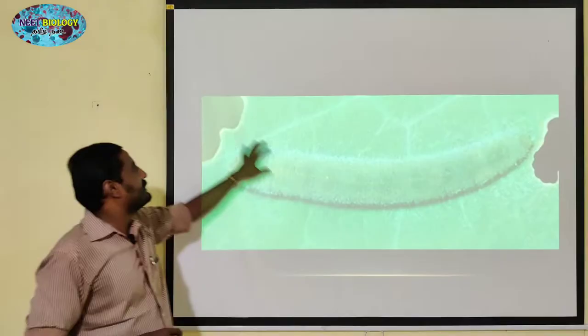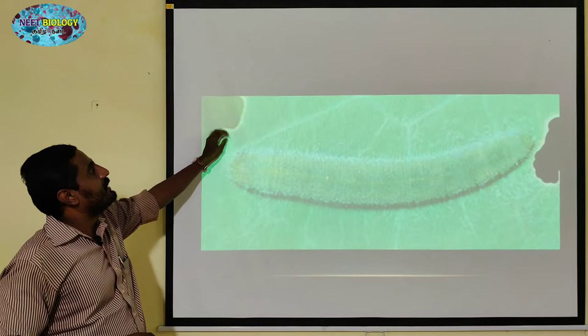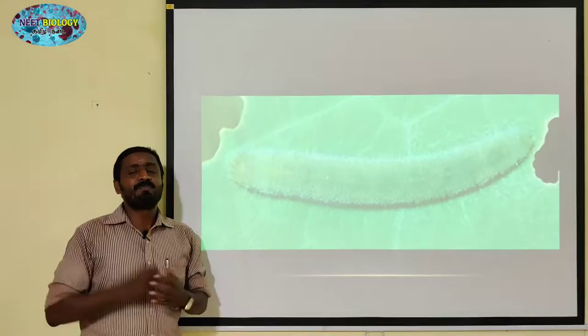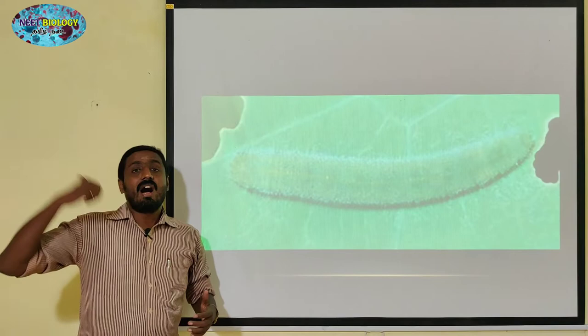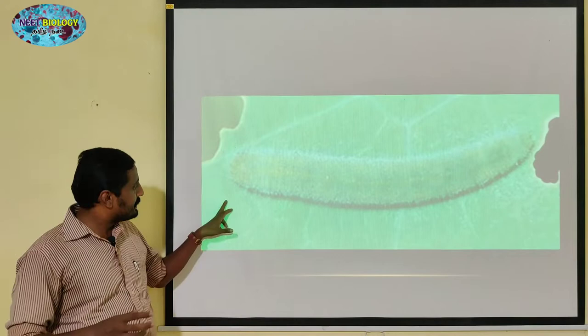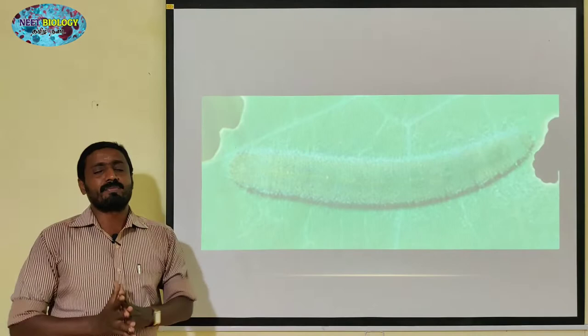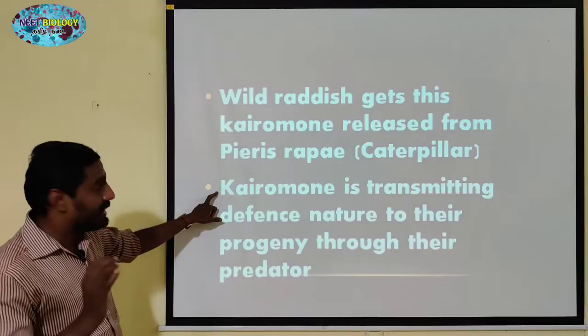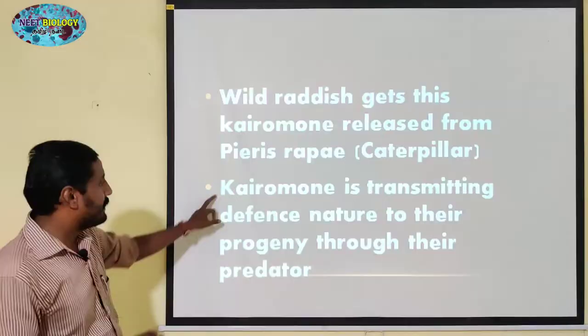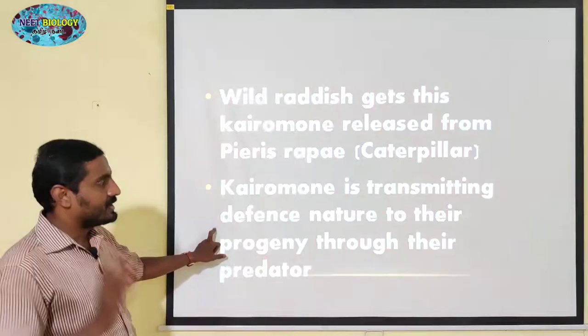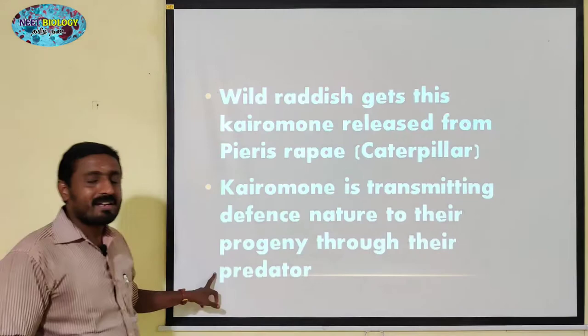The seeds will be moved, and their seeds will give a solution. Kairomone is transmitting different nature to their progeny through their predator. The predator is the caterpillar — Pieris rapae.